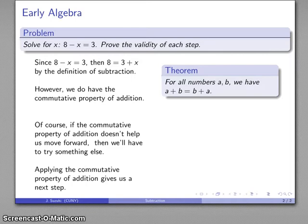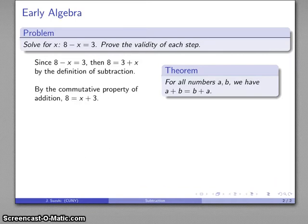Well, let's try it. Let's see what happens. So by the commutative property of addition, 8 is equal to x plus 3. And let's see, the sky hasn't fallen, so we're probably good.